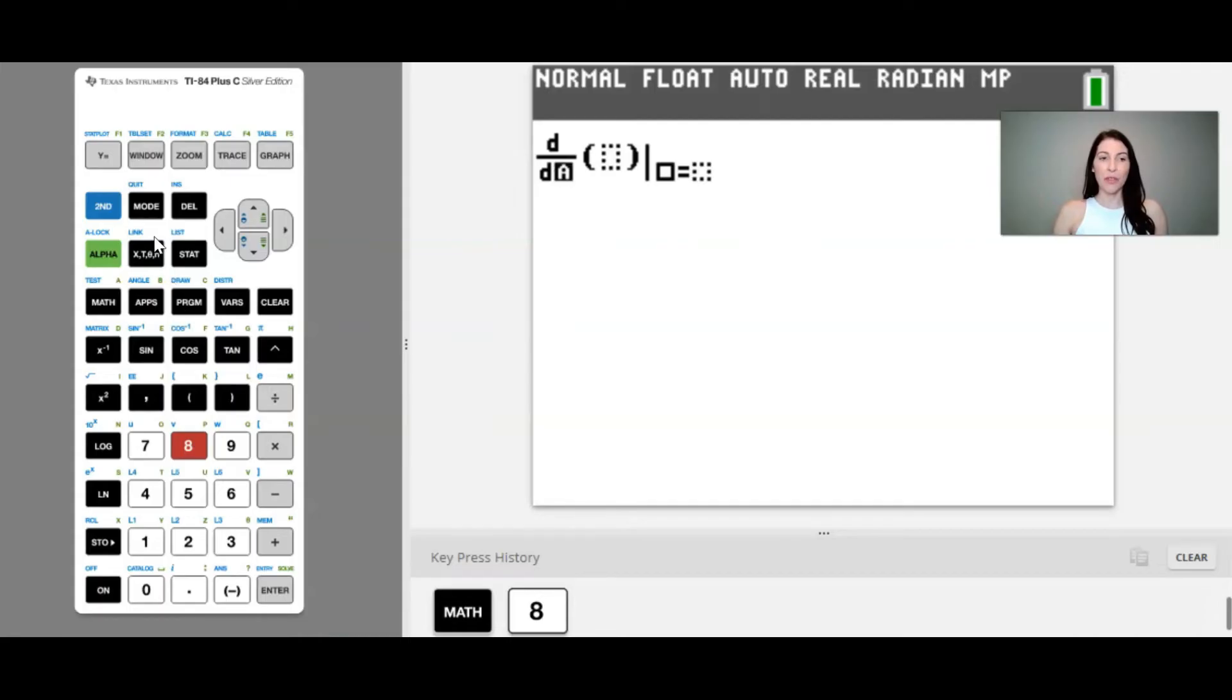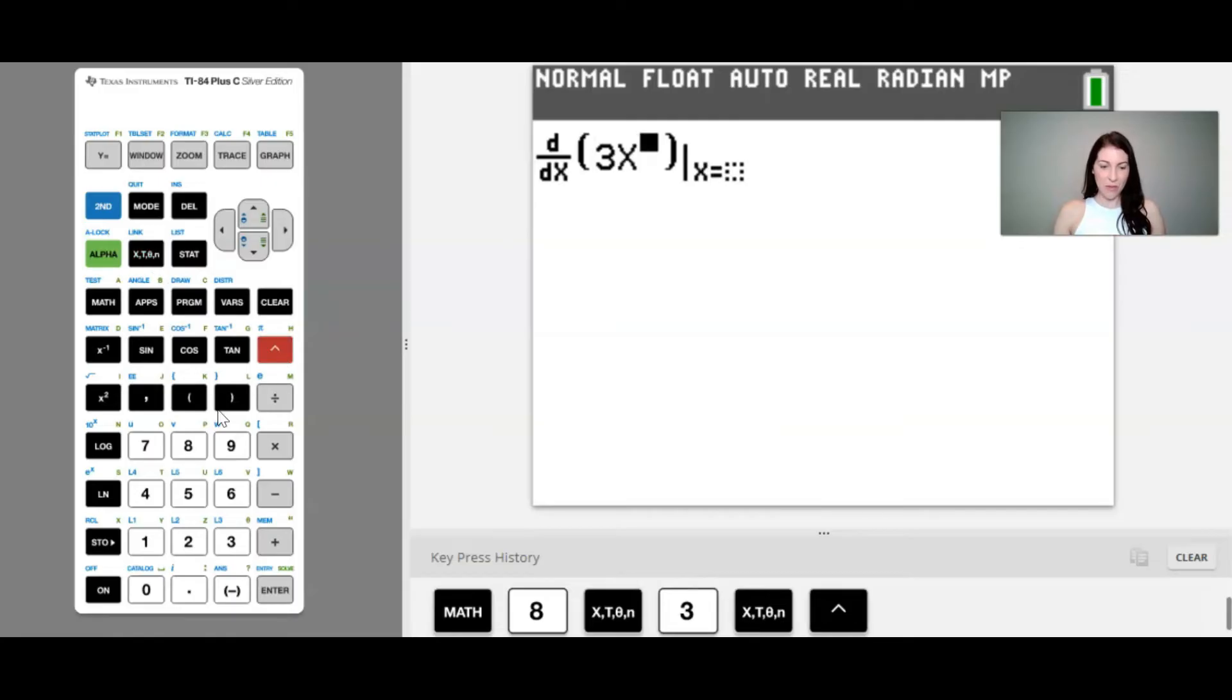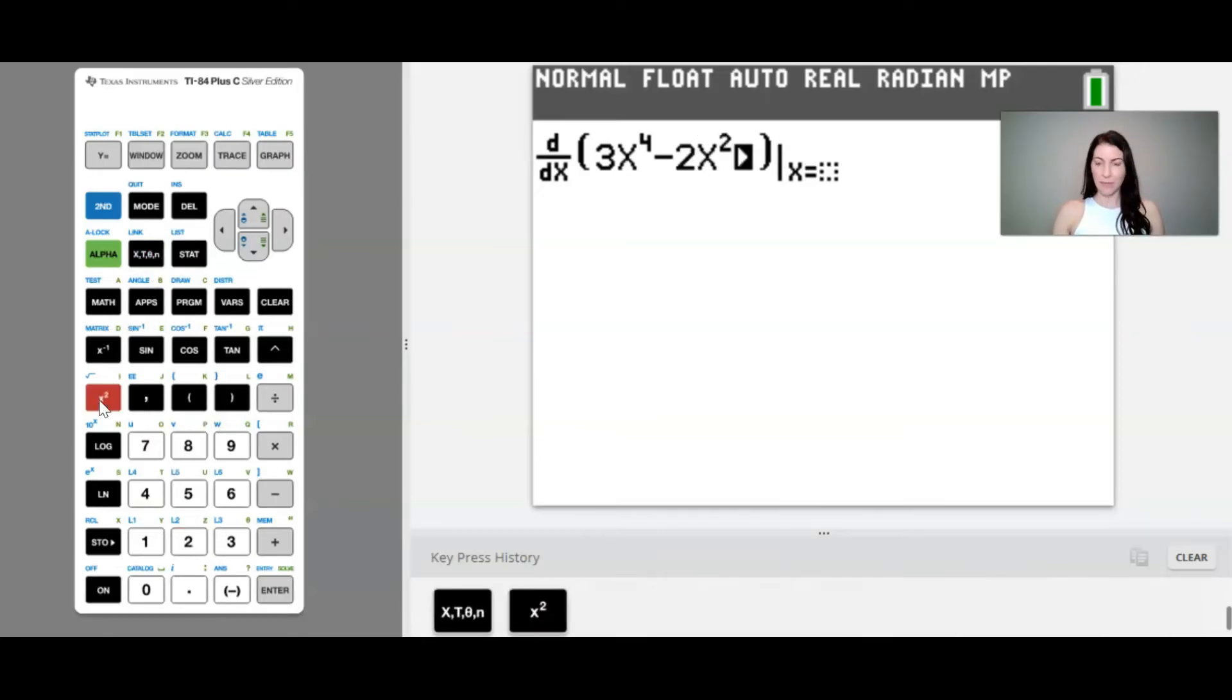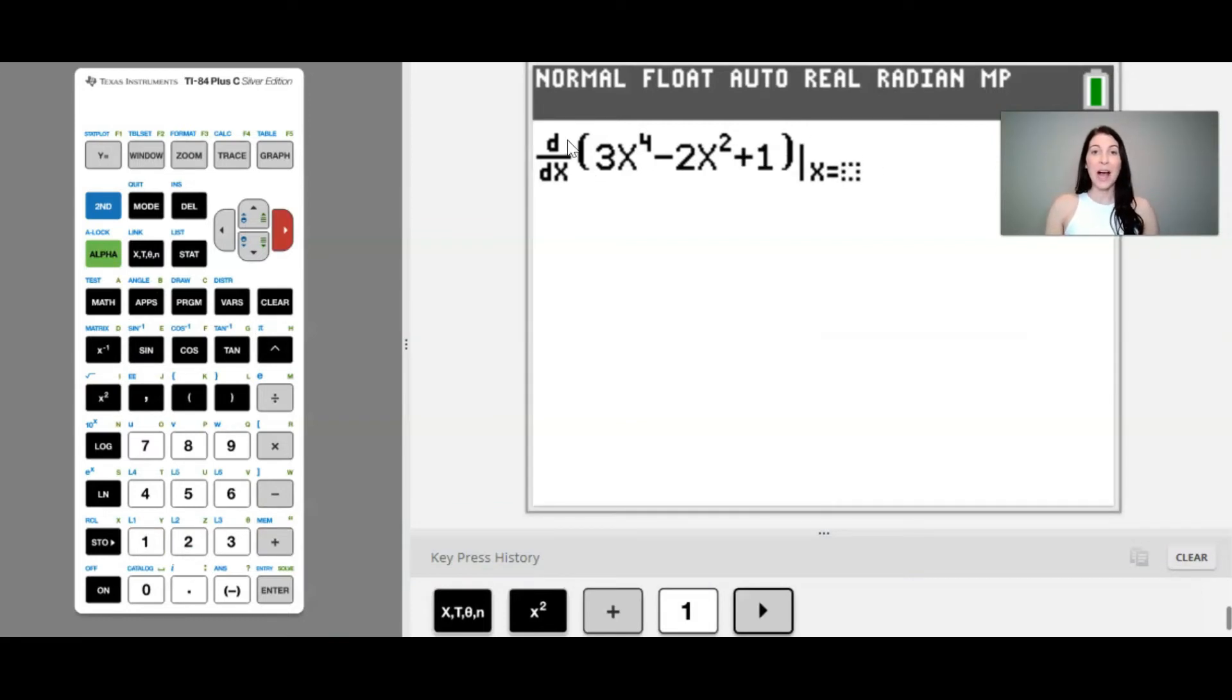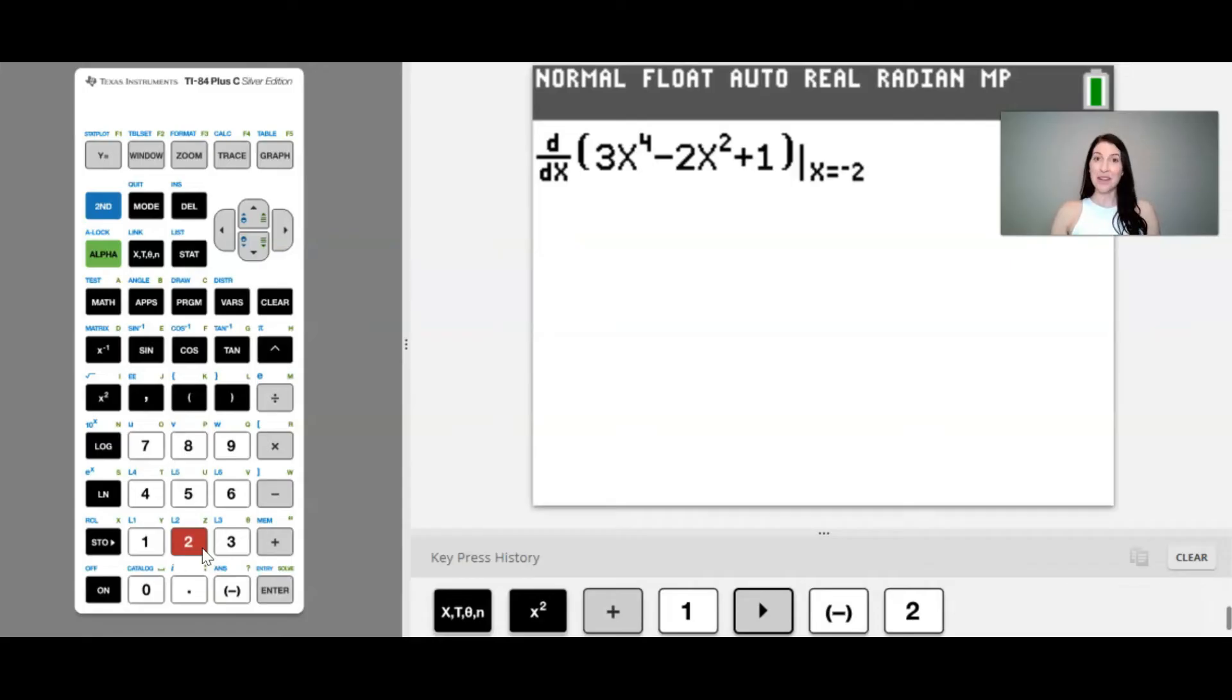We want to take the derivative with respect to the x variable. So you'll press this button here and then you will type in the function. So our function was 3x to the fourth power minus 2x squared plus 1. And so when we type it in here, the calculator is going to find the derivative of this function and then evaluate it at, and in our problem we wanted to evaluate this function, or sorry, this derivative rather, at the x value of negative 2.